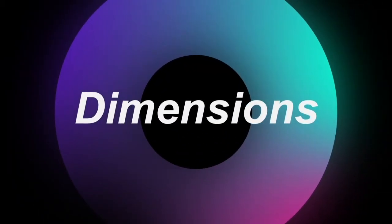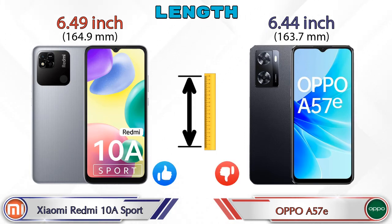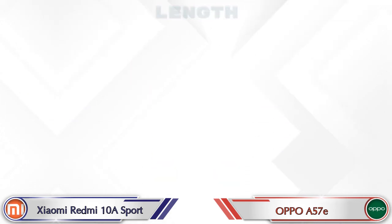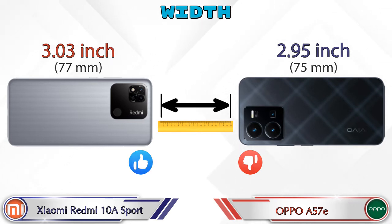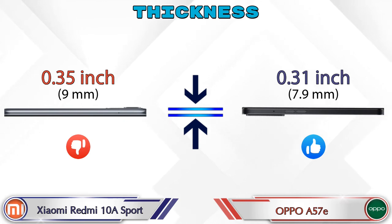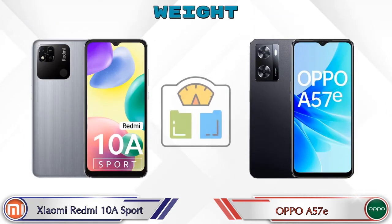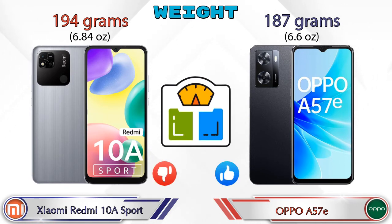Now let's check the dimensions. The length of the Redmi 10A Sport is 6.49 inches and the A57e is 6.44 inches, which is less. Width: the Redmi 10A Sport is 3.03 inches and the A57e is 2.95 inches, which is less. Thickness: the Redmi 10A Sport is 0.35 inches and the A57e is 0.31 inches. Weight: the Redmi 10A Sport is 194 grams and the A57e is 187 grams.